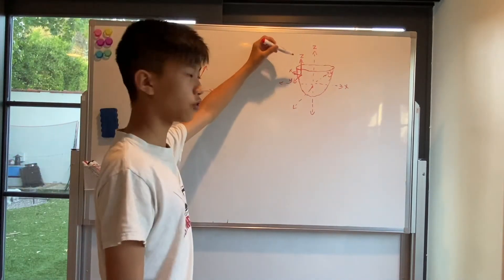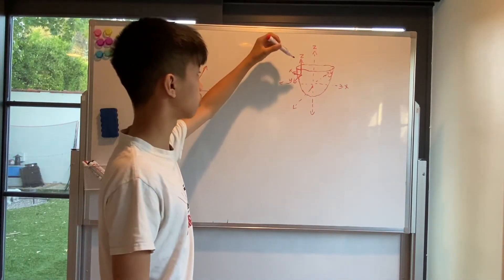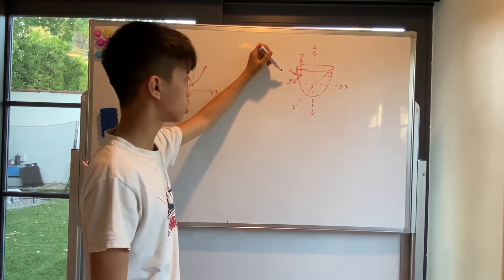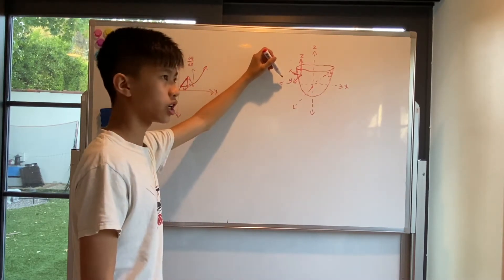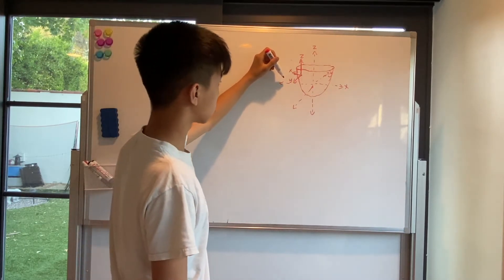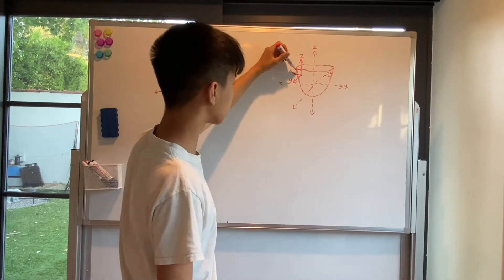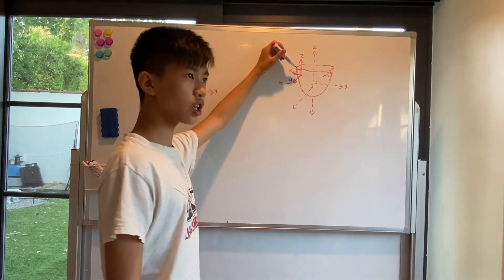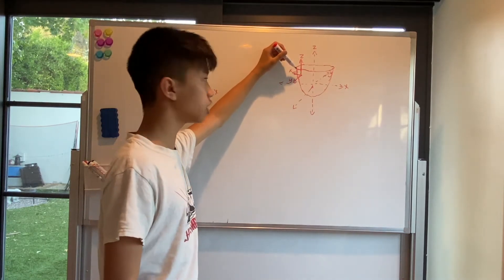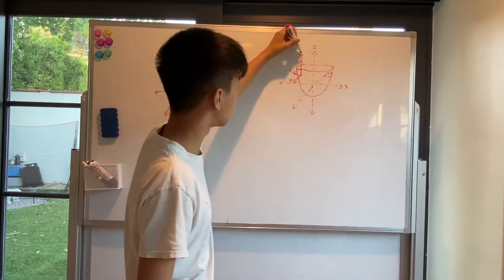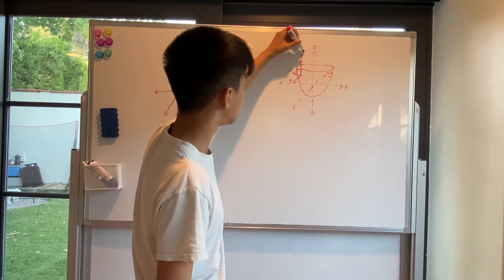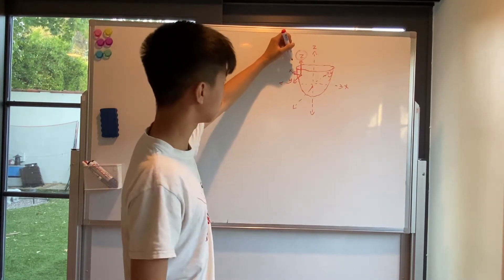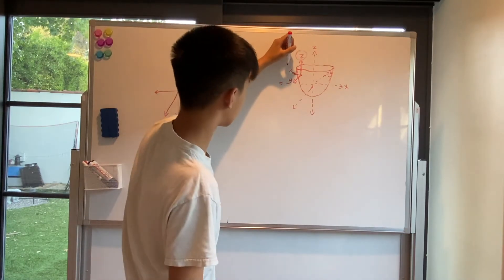However, when you get to functions of three or more variables, taking the derivative or the slope gets a little more tricky, because it's not like you can really take the slope of z with respect to both x and y. How would you do that?